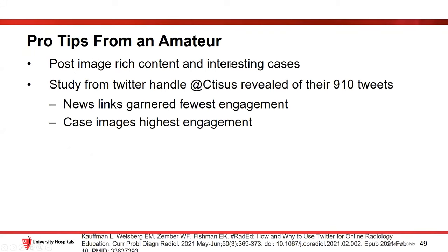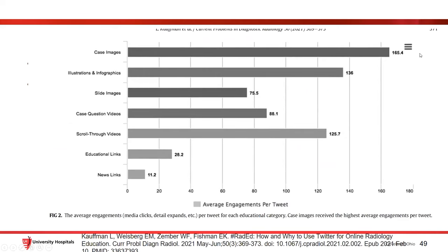Here are my pro tips from an amateur: post image-rich content and interesting cases. This is based on an article on CPDR. A study using the Twitter handle at CTSS revealed that news links garnered the fewest engagement when they went back and looked at their tweets, whereas case images had the highest engagement — 165 interactions for case images, illustrations 136, scroll-through videos 125, with educational and news links far fewer. The more image-rich content you can post, the more likely folks will interact.